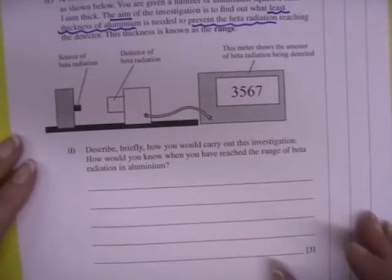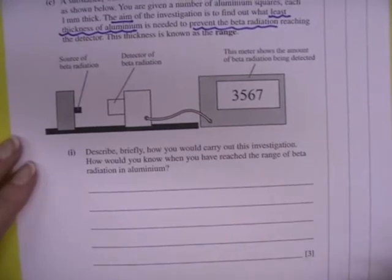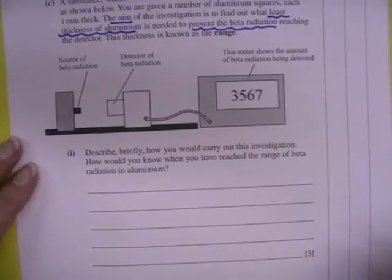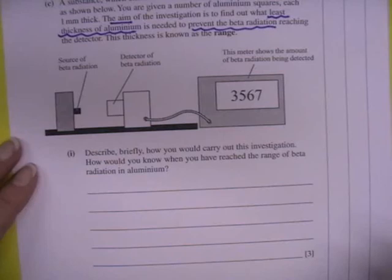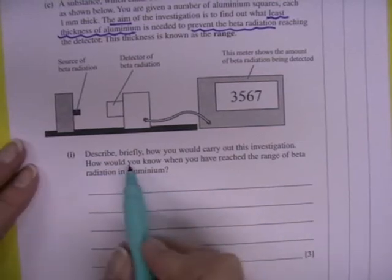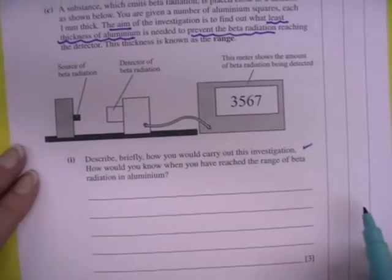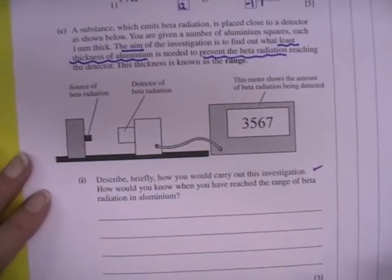Part 1. Describe briefly how you would carry out this investigation. How would you know when you have reached the range of beta radiation in aluminum? First of all, let's deal with the first line. Describe briefly how you would carry out this investigation.